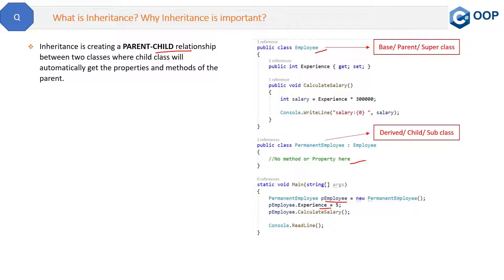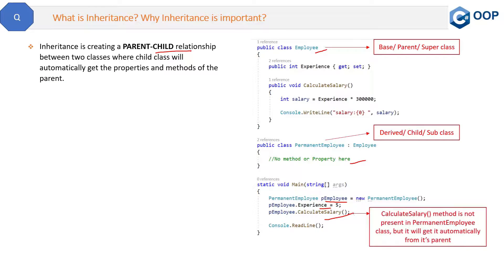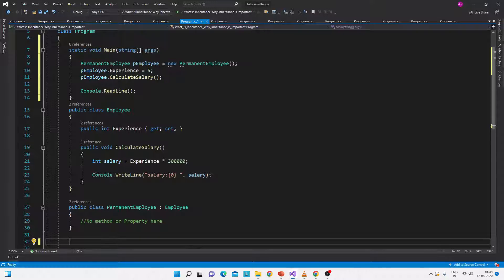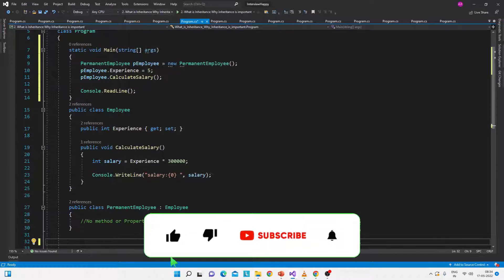But still, when we create the object of the PermanentEmployee class inside the main method, we will automatically get the 'experience' property and the 'CalculateSalary' method. So the CalculateSalary method is not present in the PermanentEmployee class, but it will automatically get it from its parent — and that is what inheritance is.